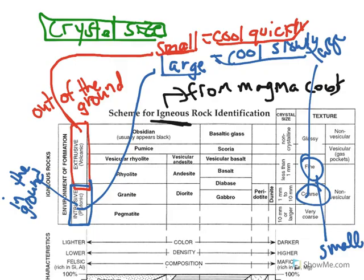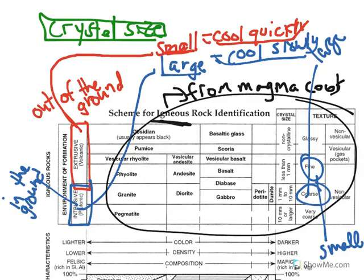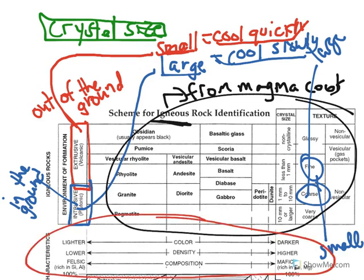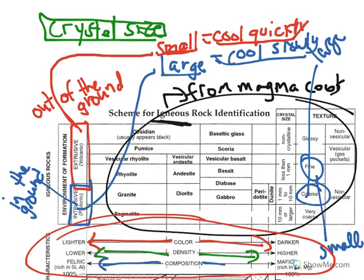I think the remainder of this chart you'll be able to figure out on your own. Also, keep in mind this part of the chart: lighter color to the left, darker color to the right; lower density to the left, higher density to the right. The word felsic means light in color; mafic means dark in color.